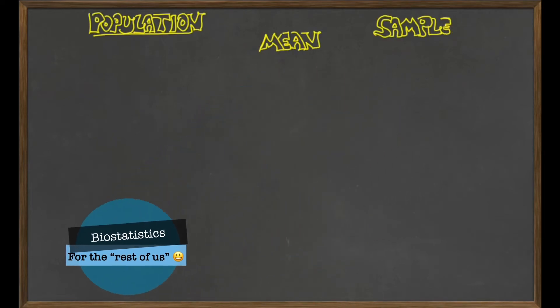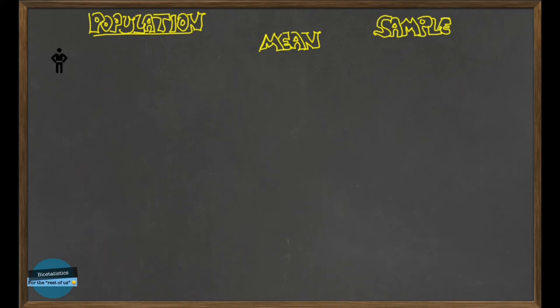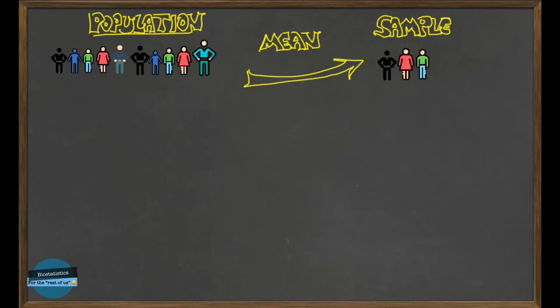In my last video, you all know that the population refers to all the items of interest in a study, while a sample is simply a subset of the population.